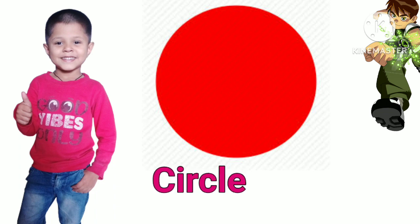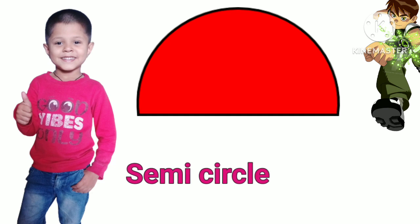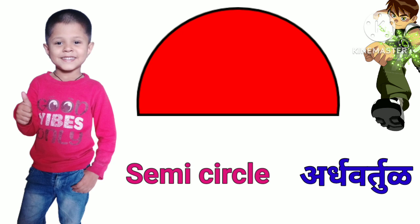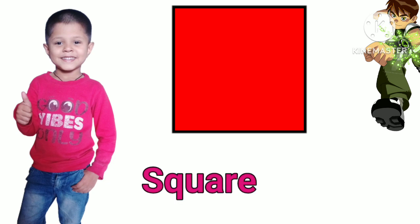Circle. C-I-R-C-L-E. Circle means Vartul. Semi-circle. S-E-M-I-C-I-R-C-L-E. Semi-circle means Ardha-Vartul. Square. S-Q-U-A-R-E. Square means Chauros.